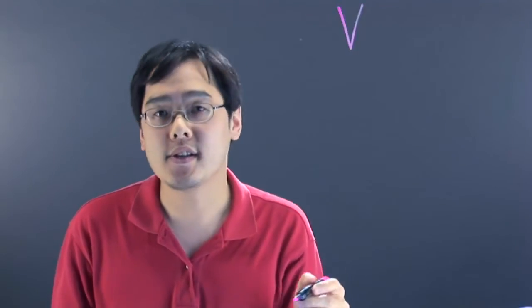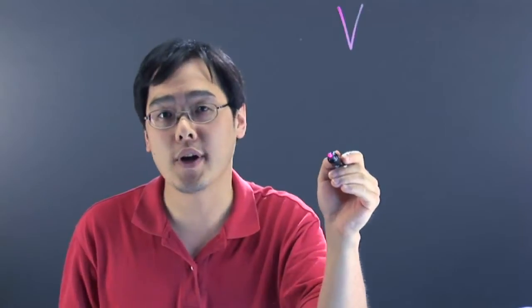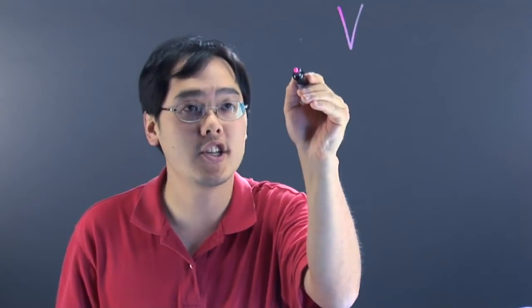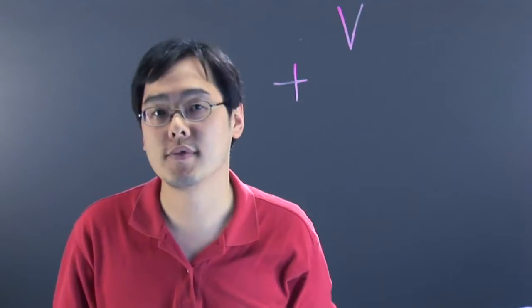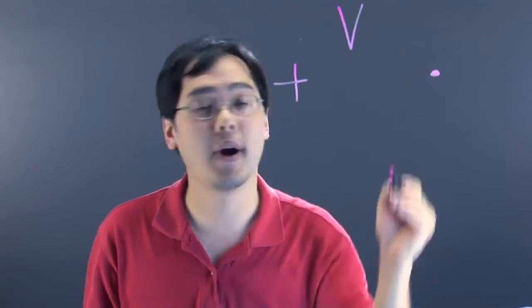What that basically means is in order to have a vector space, you have to have two operations in place: vector addition, denoted by the addition symbol, and scalar multiplication, denoted by a dot.